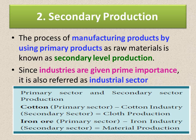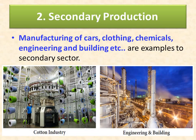Secondary production involves manufacturing and assembly. It helps in generating employment opportunities and contributes to the growth and prosperity of a country. The finished products we use in our homes and for our businesses are manufactured in secondary industries — food manufacturing, textile manufacturing, and other industries. Examples include manufacturing of cars, clothing, chemicals, engineering, and buildings. You can see large-scale cotton industry in progress, as well as engineering and buildings under construction.